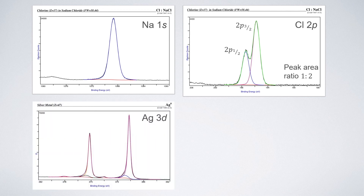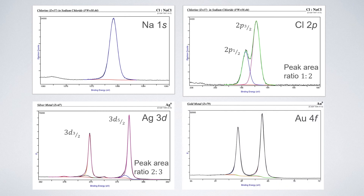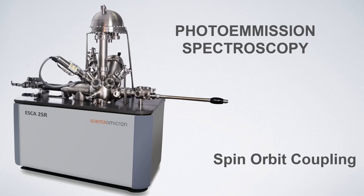The third example is silver 3d, where the 3d electrons split into 3d3/2 and 3d5/2 spin states, with a peak ratio of 2:3 as seen in the image. Similarly, for gold 4f orbitals, the splitting is into 4f5/2 and 4f7/2 spin states, and the peak area ratio is 3:4.